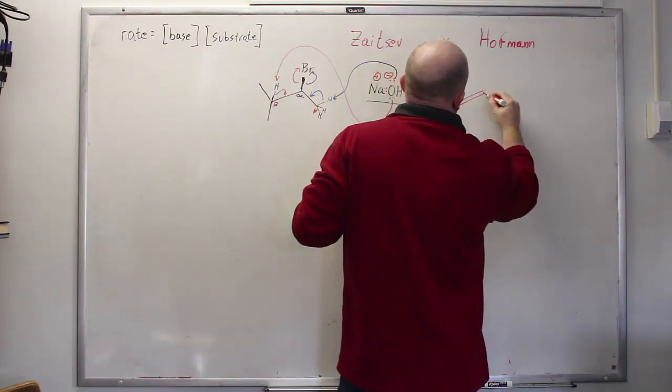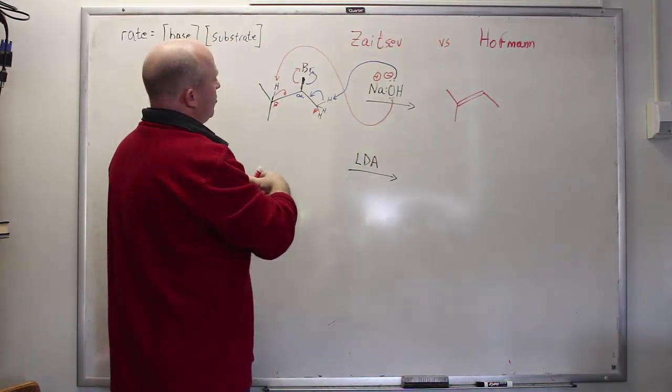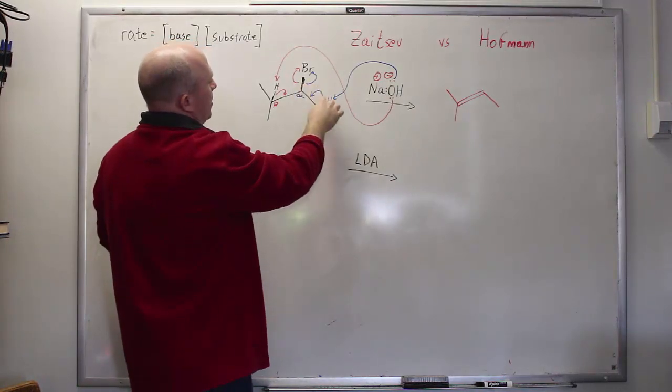The red structure is going to have a double bond between this carbon and where the leaving group was. In other words, it's going to have a tri-substituted double bond. Meanwhile, the blue structure is going to have a double bond between the bromine and the methyl, which is to say it's going to be a terminal mono-substituted double bond.